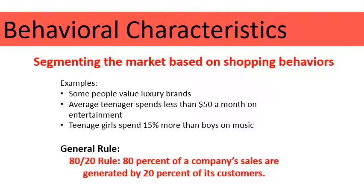Our fourth way of segmenting a market is behavioral characteristics — what are your shopping behaviors when it comes to different products? For example, some people really value luxury brands and are willing to pay a premium for them — that's a shopping behavior. Looking at it by age: the average teenager spends less than $50 a month on entertainment — that's a behavioral characteristic. Teenage girls spend 15 percent more than boys on music. We're tying a demographic into a shopping behavior, which makes it a behavioral characteristic.